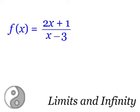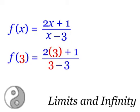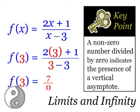For example, take a look at this function f(x) equals the fraction 2x plus 1 divided by the quantity x minus 3. Now if you plug in 3 to this you're going to get 7 divided by 0. I know we've seen 0 divided by 0 in previous examples but we've never seen a nonzero number divided by 0.